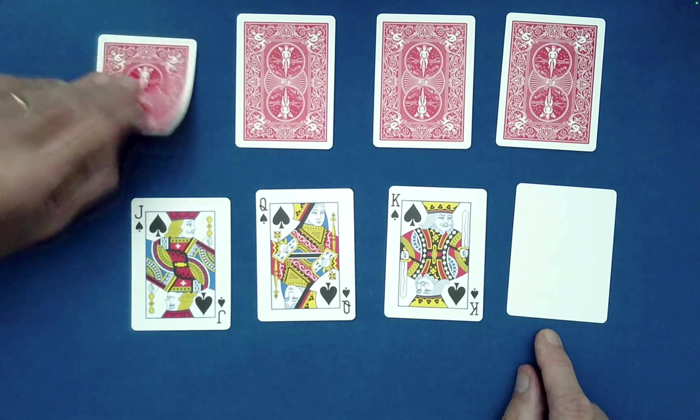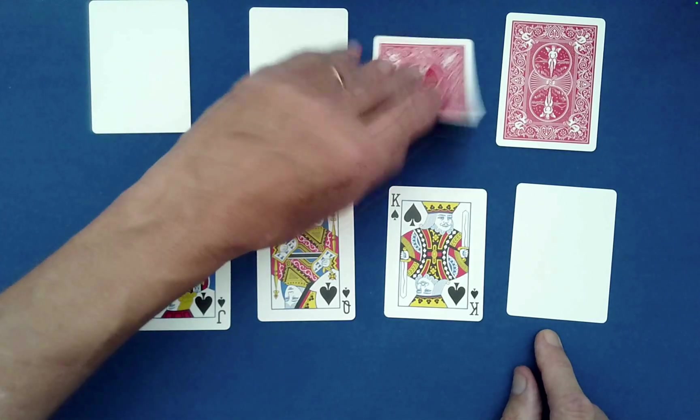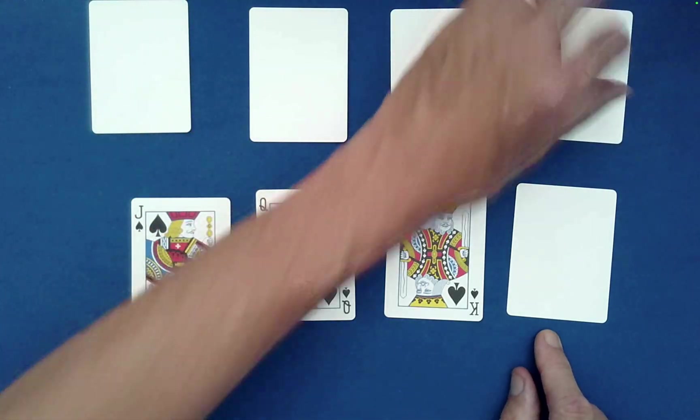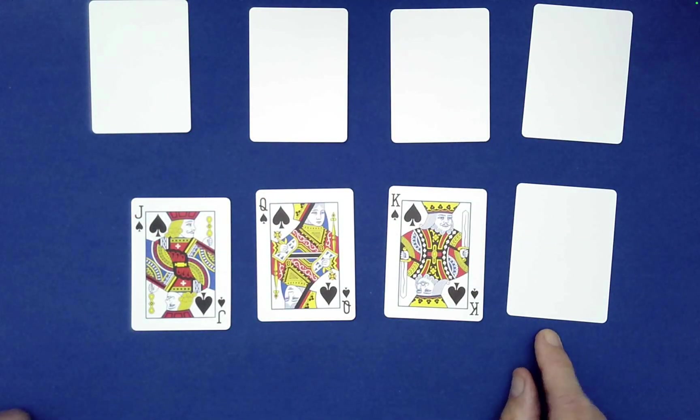And then the spectator is going to look at the cards and go, what the heck? That final card told us what the spectator would freely choose for themselves.